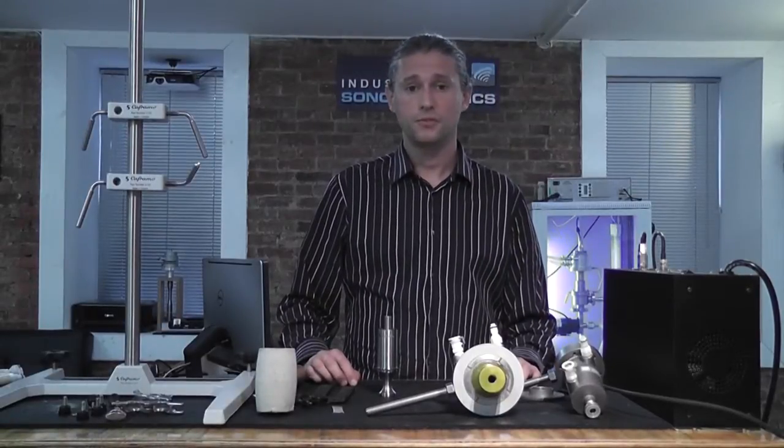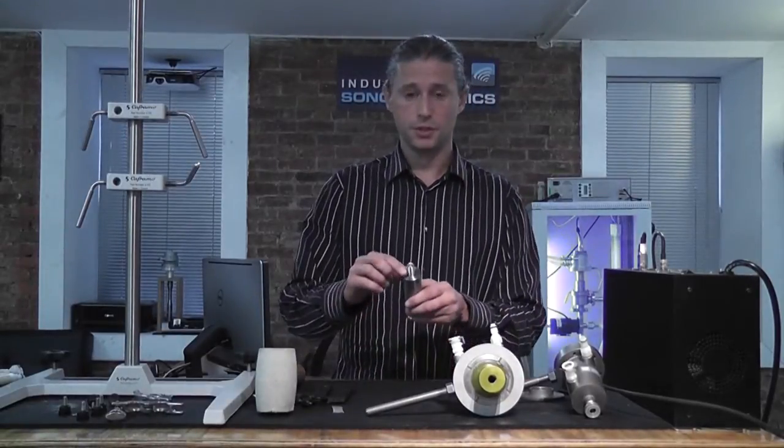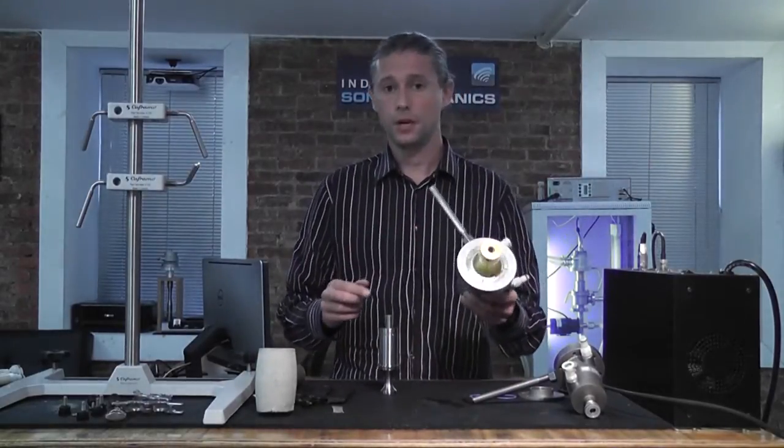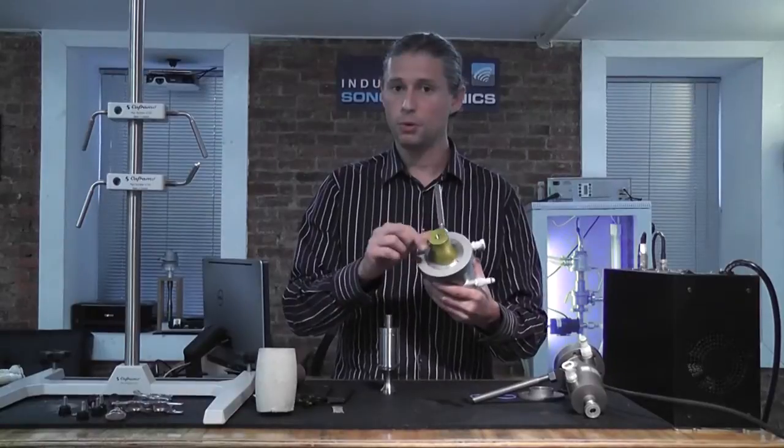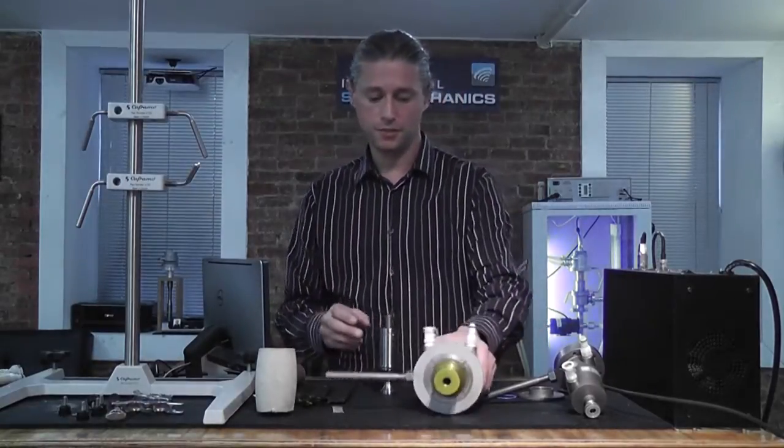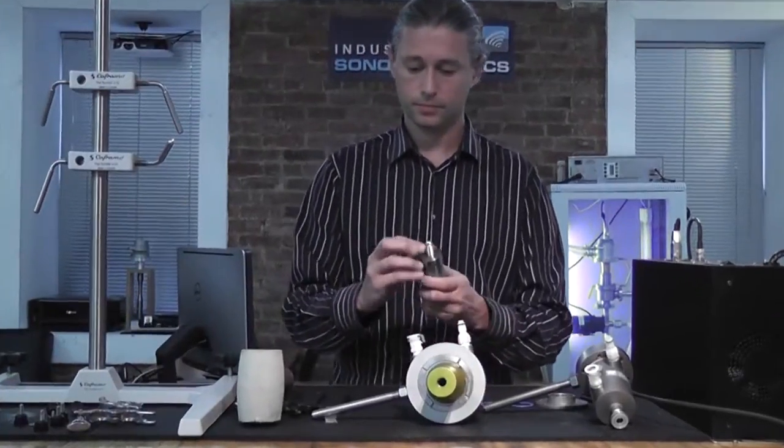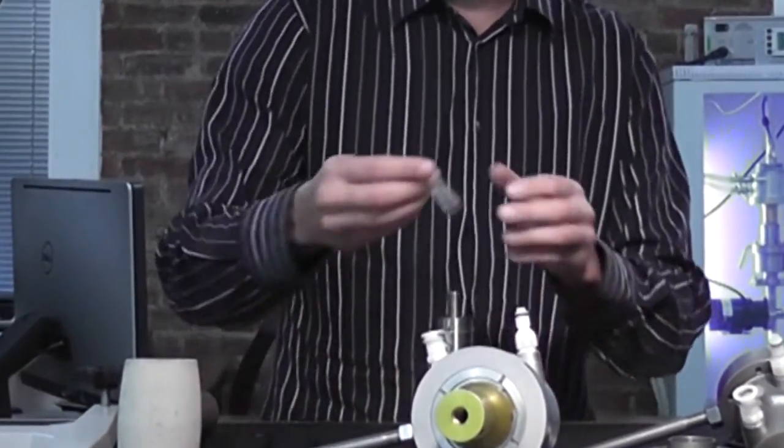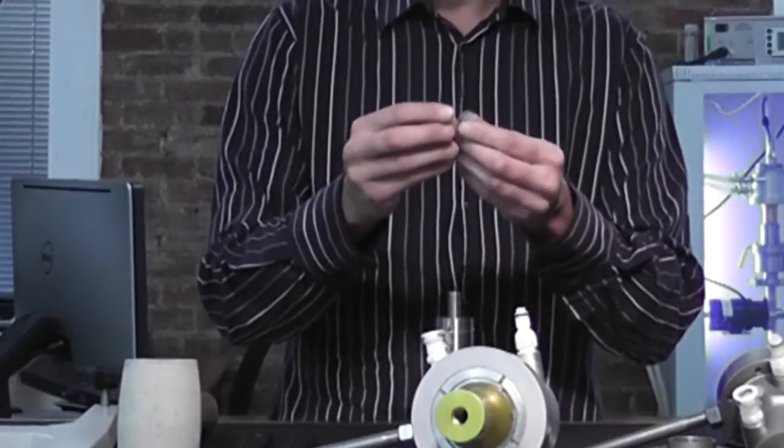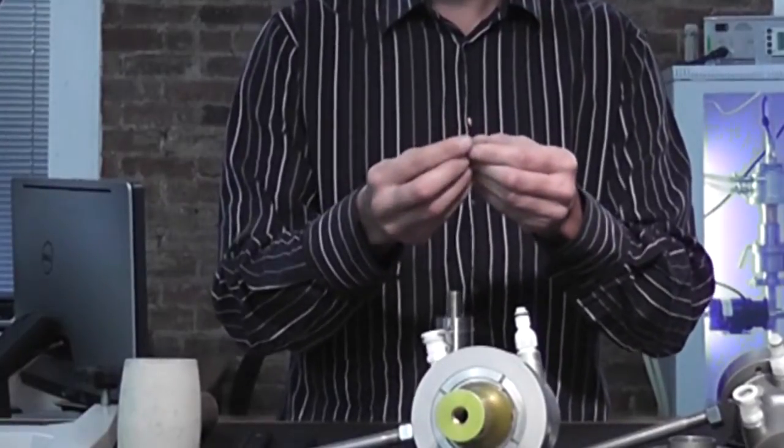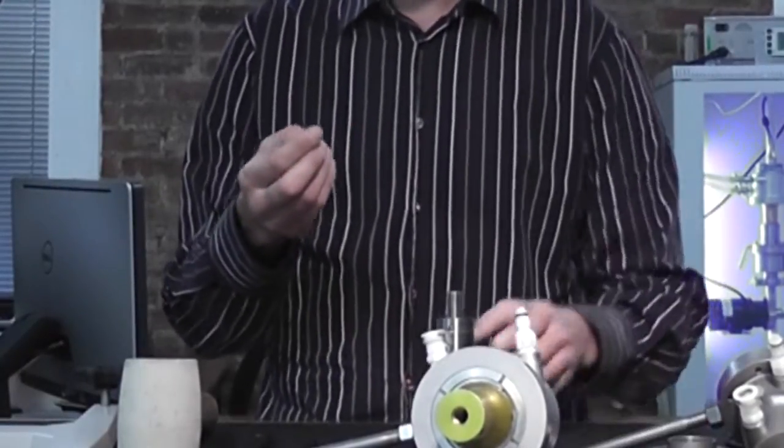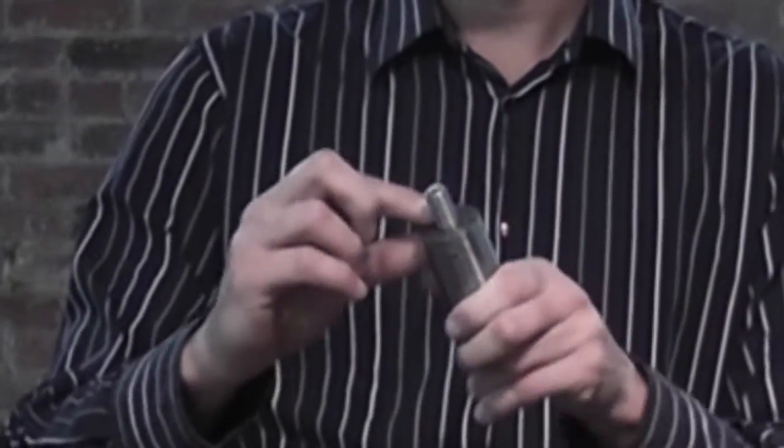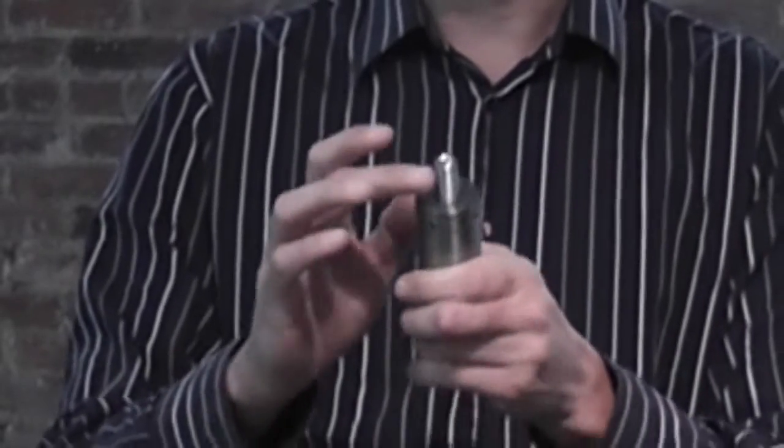To assemble the system, first make sure that the mating surfaces of the horn and the transducer are completely clean. There should be no particles, nothing that can scratch these surfaces. Next, use a small amount of silicone grease on your finger and spread it on the horn's mating surface evenly, but not on the bolt.